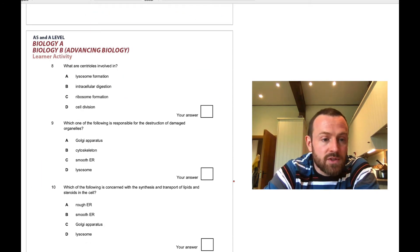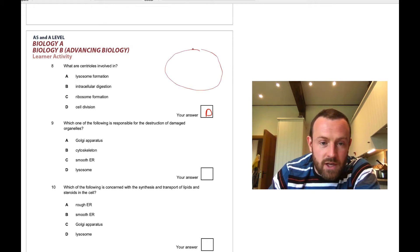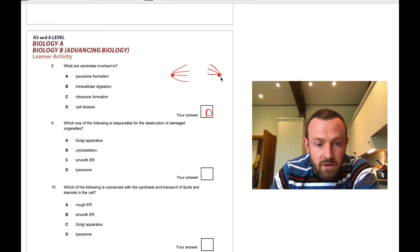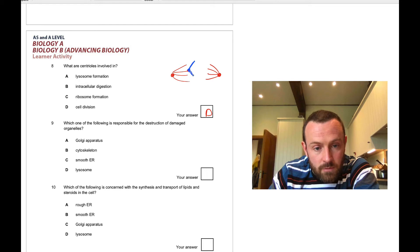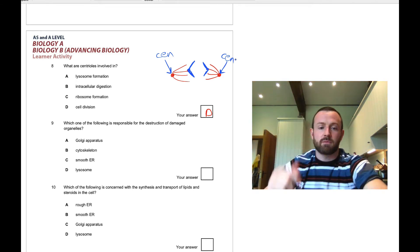Question eight: centrioles are involved in cell division, D. When the nucleus is separated, at opposite poles of the cell there is a centriole here and here. The centriole sends out microtubule filaments or spindle fibers that attach to those chromosomes, which get pulled apart. A centriole is an arrangement of microtubules in this arrangement, kind of a cross of microtubules.